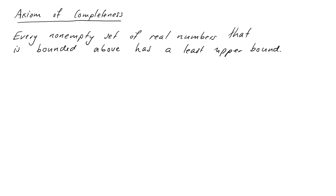It may seem kind of trivial at first, but for example we've previously shown that the square root of 2 doesn't exist in the rational numbers. However, we could come up with a sequence of rational numbers that approximate the square root of 2 to as much accuracy as we like. That set is bounded above, and the axiom of completeness says there is a least upper bound — that will be the square root of 2.